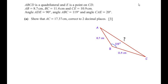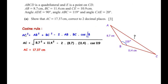Let us write down the cosine rule: AC² equals the sum of the squares of the other two sides, that is AB² plus BC², minus two times AB times BC times cos of the angle opposite to the missing side. In this case it is cos of angle B, or cos of angle ABC.